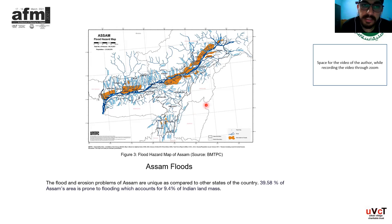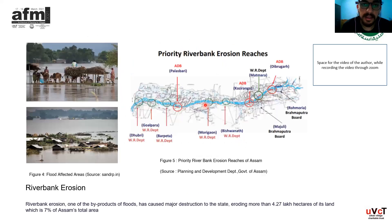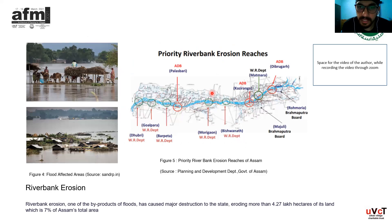39.58% of Assam is today prone to floods out of 78 lakh hectares of land. Along with floods comes riverbank erosion, which is basically wearing away of the banks due to rapidly flowing flood water. This happens due to ill maintenance of riparian buffers, caused by anthropogenic activities like human encroachments, human settlements along the rivers, and destruction of banks and bridges, which disrupts river dynamics.